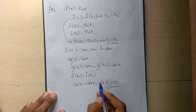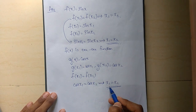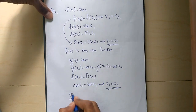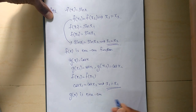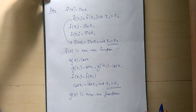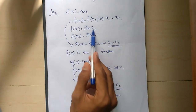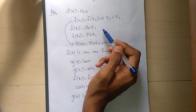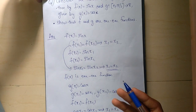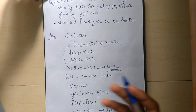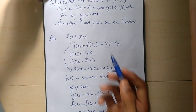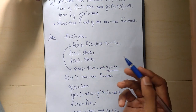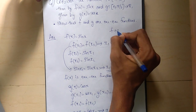We have proved that because f of x1 equals f of x2 implies x1 equals x2, the condition is satisfied. Now we have to show that g of x is also a one-one function. We choose two functions and prove they satisfy the one-one condition: f of x1 equals f of x2 implies x1 equals x2. So both f and g are one-one functions.